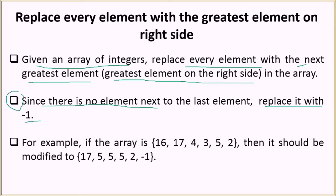That is a corner case. Let's understand this with an example. If you are given this array, let's iterate over each element one by one. When we iterate over 16, we look at the remaining array and the next greatest element is 17, so we replace 16 with 17. Then we come to 17 and look at the remaining elements — the greatest element is 5, so we replace it with 5.